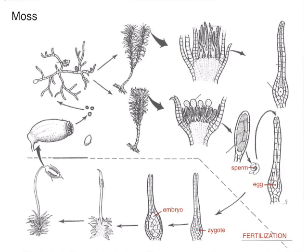The next stage we would call an embryo, and then the embryo would divide and divide and divide, and then it would make a young sporophyte. You can see the foot, which anchors the sporophyte into the tissue of the gametophyte, and then there's a seta — the stalk.